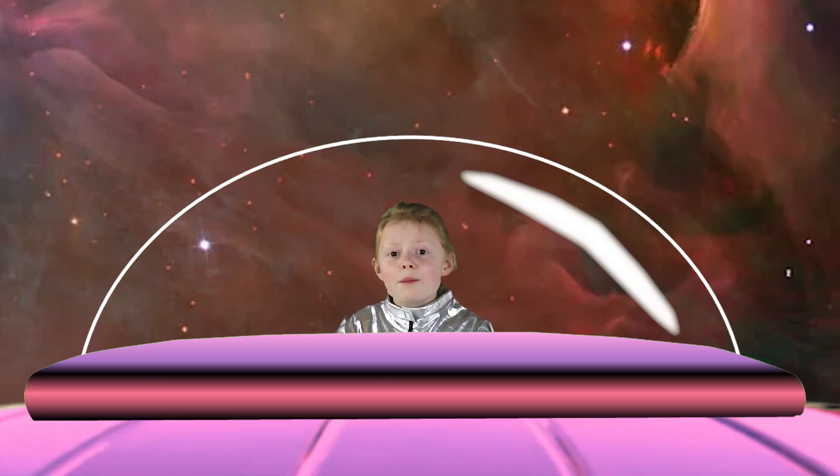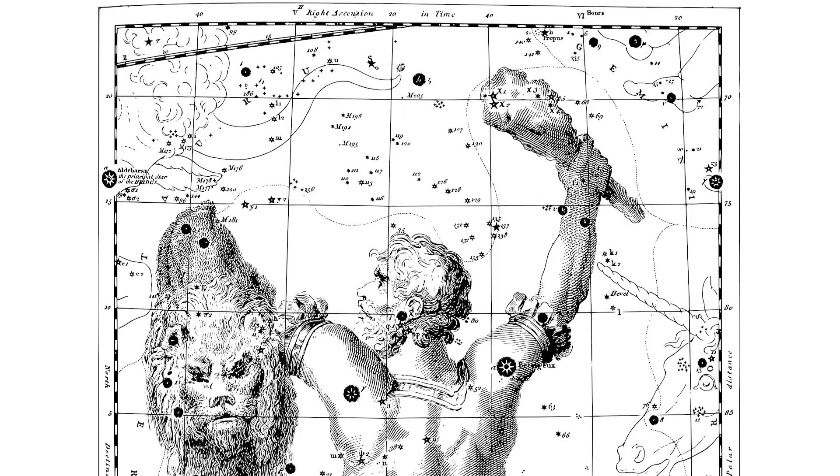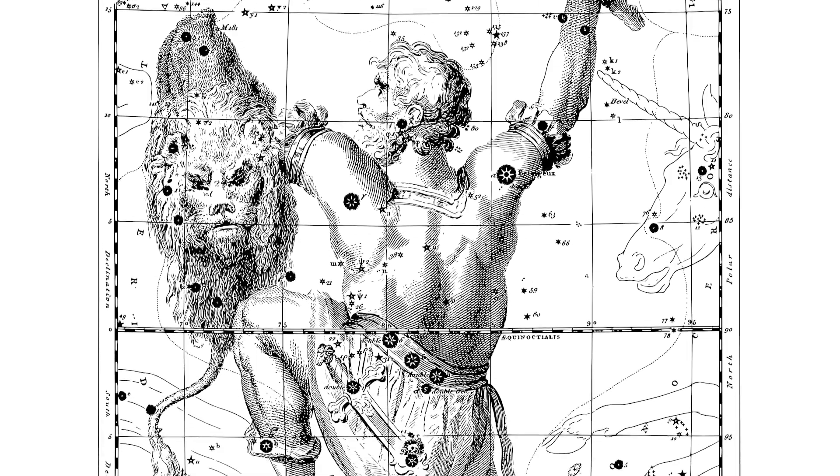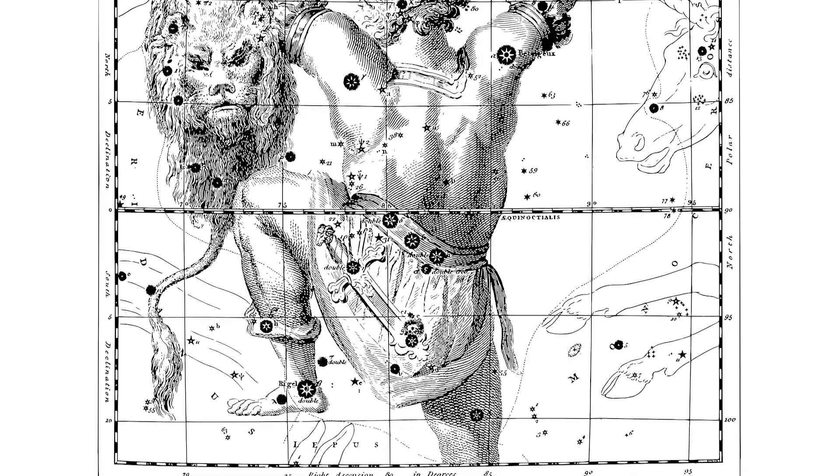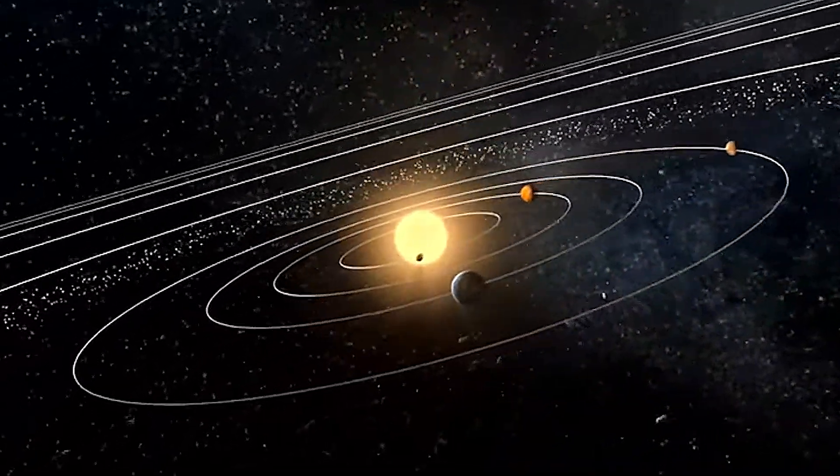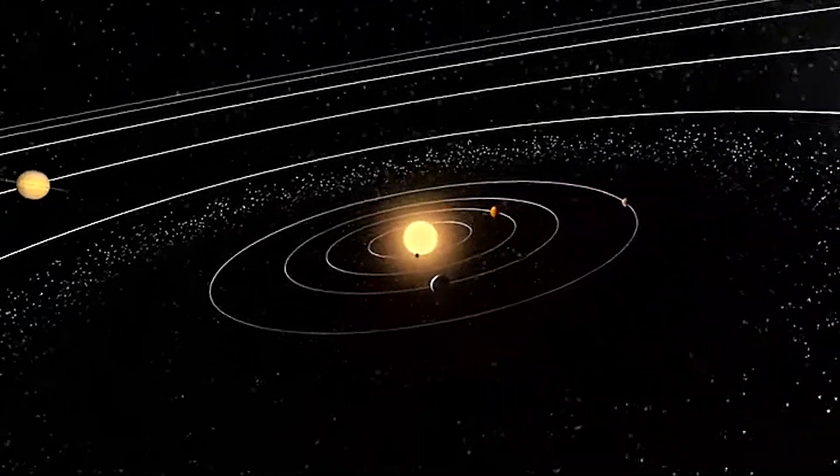Whoa, you're like a baby star factory! Exactly. Did you know I'm located in the constellation Orion? You can spot me with a telescope from Earth. Also, some of the stars I create are massive and will go on to form their own solar systems.